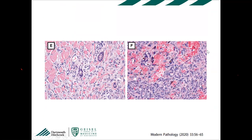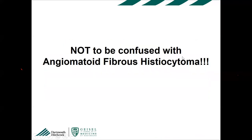Even in the aneurysmal type, at the edges of the tumor you'll see the characteristic lateral entrapment of collagen bundles. You should not confuse the aneurysmal type of fibrous histiocytoma with angiomatoid fibrous histiocytoma — they are completely different entities. In old literature you may see cases reported as 'angiomatoid fibrous histiocytoma' that were actually aneurysmal dermatofibroma, but today angiomatoid fibrous histiocytoma is a completely different entity.